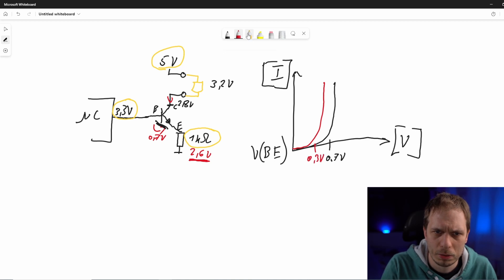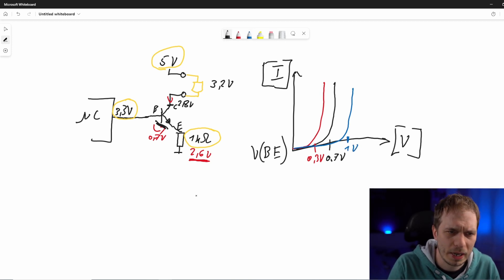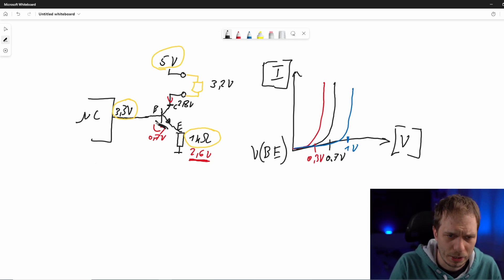When I make it cold, let's do blue for cold, then it's around here. That's just one volt. Okay, so what's happening now with our circuit? Let's estimate we have 3.3 supply voltage and we have this drop and this resistor.